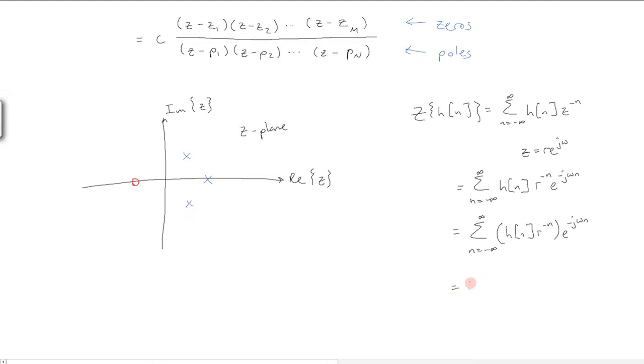This is the discrete-time Fourier transform of H of n multiplied by R to the minus n.